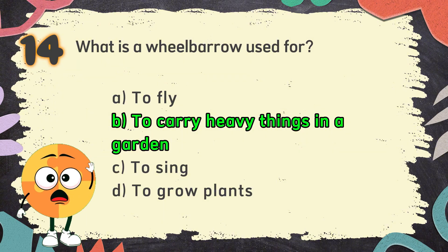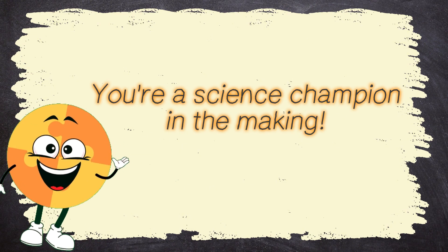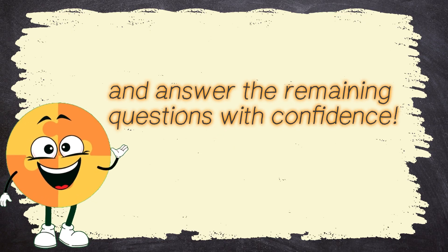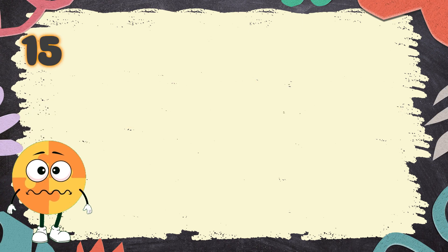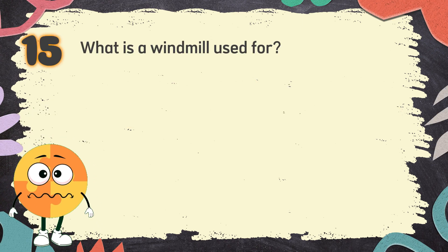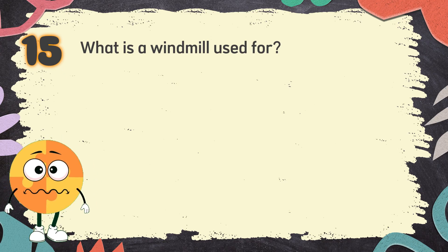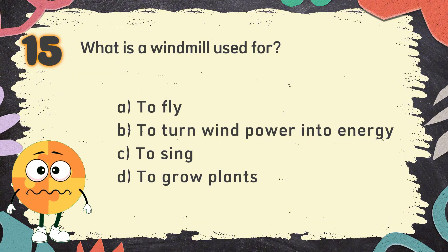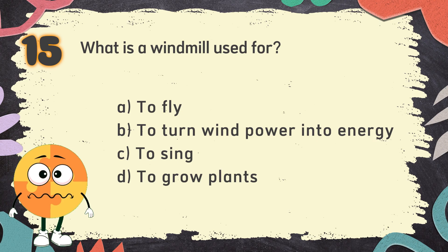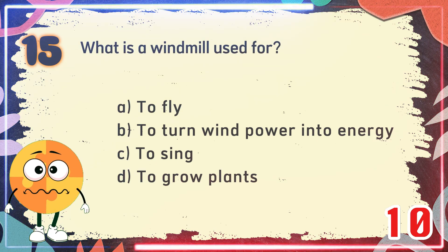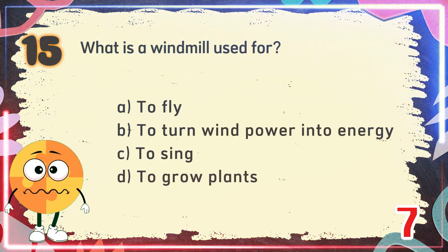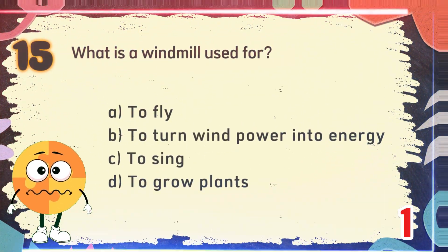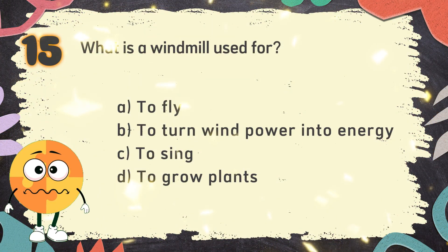You're a science champion in the making! Keep your eyes on the prize and answer the remaining questions with confidence. Number 15. What is a windmill used for? The choices are: A. To fly. B. To turn wind power into energy. C. To sing. D. To grow plants. The correct answer is B. To turn wind power into energy.